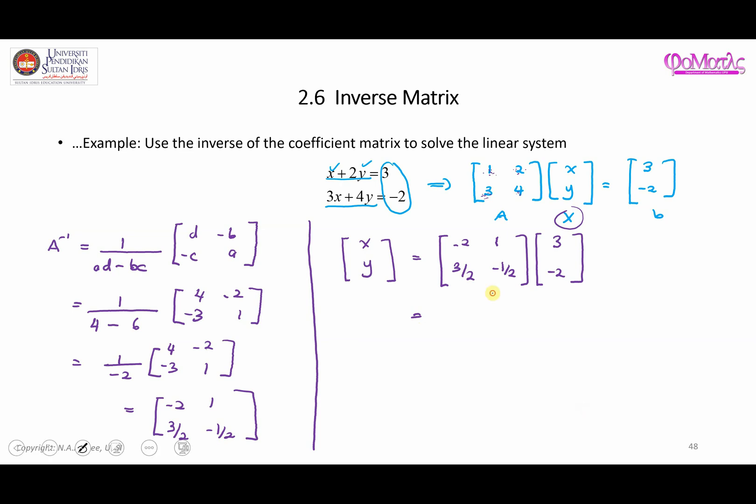This is equal to, as you can see, a two by two matrix times a two by one matrix. Therefore, the result you're going to get is a two by one matrix, two rows and one column. For this part here, you will have negative two times three is negative six, plus one times negative two is negative two. So the answer here is negative eight. For the second position, we will have three over two times three is nine over two, plus negative one over two times negative two is positive one. So nine over two plus one is 11 over two. Therefore, the value of X is negative eight and the value of Y is 11 over two.